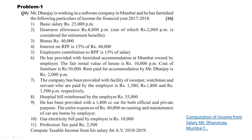Number one: Basic salary is Rs. 25,000 per month. Number two: Dearness allowance is Rs. 8,000 per month, out of which Rs. 2,000 per month is considered for retirement benefits. Number three: Bonus is Rs. 40,000.